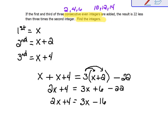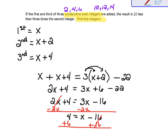And now we can put together our x's. I'm going to move my 2x to the right by subtracting 2x from both sides. So we're going to end up with 4 equals x minus 16. And then we can add 16 to get x all alone. So 20 equals x.